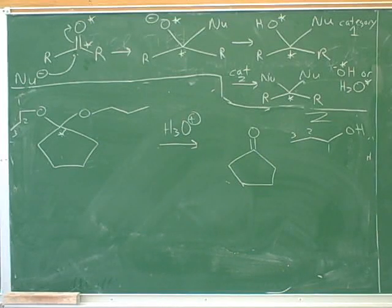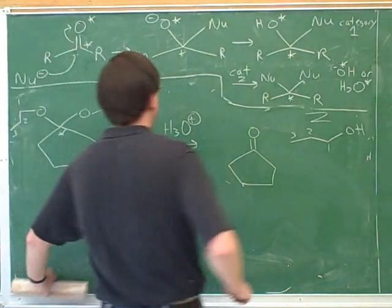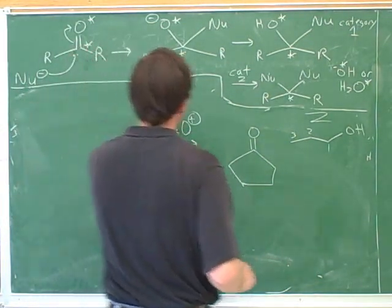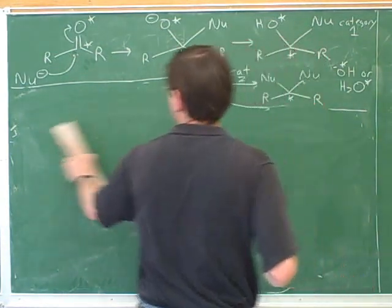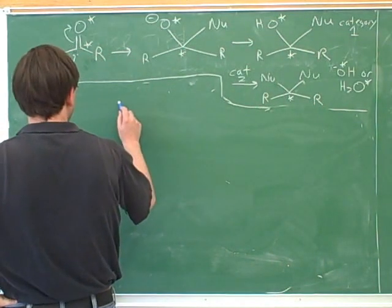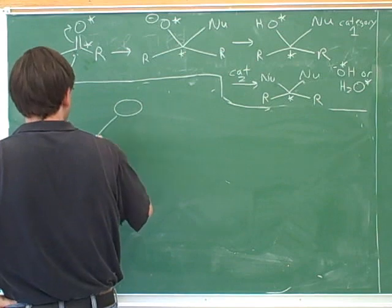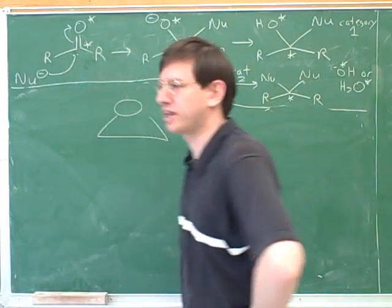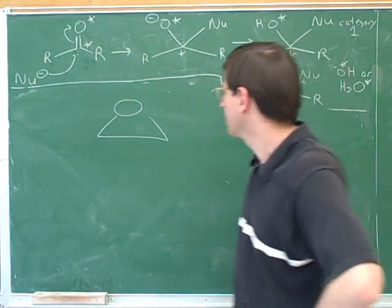Show how an epoxide would react with a nucleophile core and acid. First of all, what is an epoxide? A cyclic membrane with an oxygen instead of a carbon. Three-membered ring with an oxygen instead of a carbon. That's right.